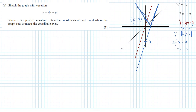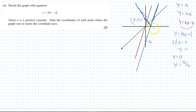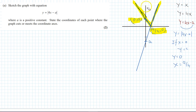If y = 0, then x = a/4, so the x-intercept is (a/4, 0). The coordinates of the key points are (0, a) and (a/4, 0). When drawing this graph in the examination, make sure to remove any construction lines. That is your final graph.